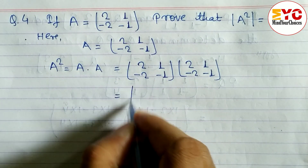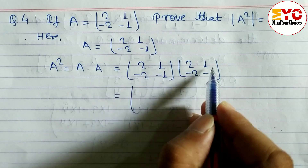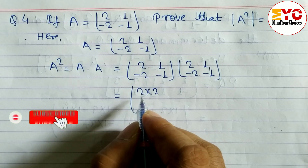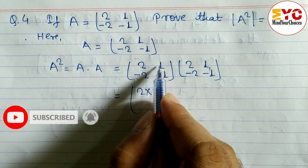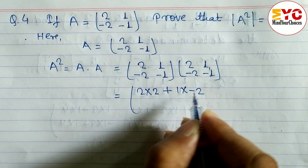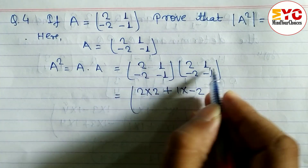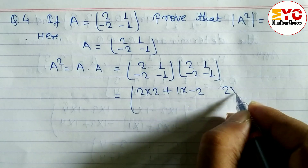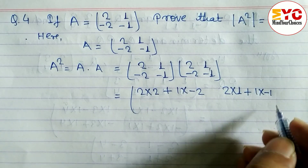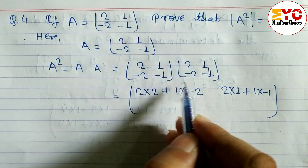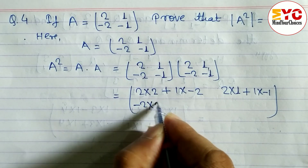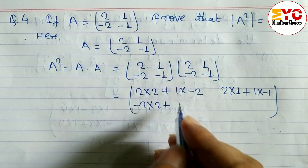To multiply two matrices, we multiply first row by first column, then first row by second column. So: first row, first column: 2 into 2 plus 1 into minus 2. First row, second column: 2 into 1 plus 1 into minus 1. Then second row, first column: minus 2 into 2 plus minus 1 into minus 2. Second row, second column follows similarly.